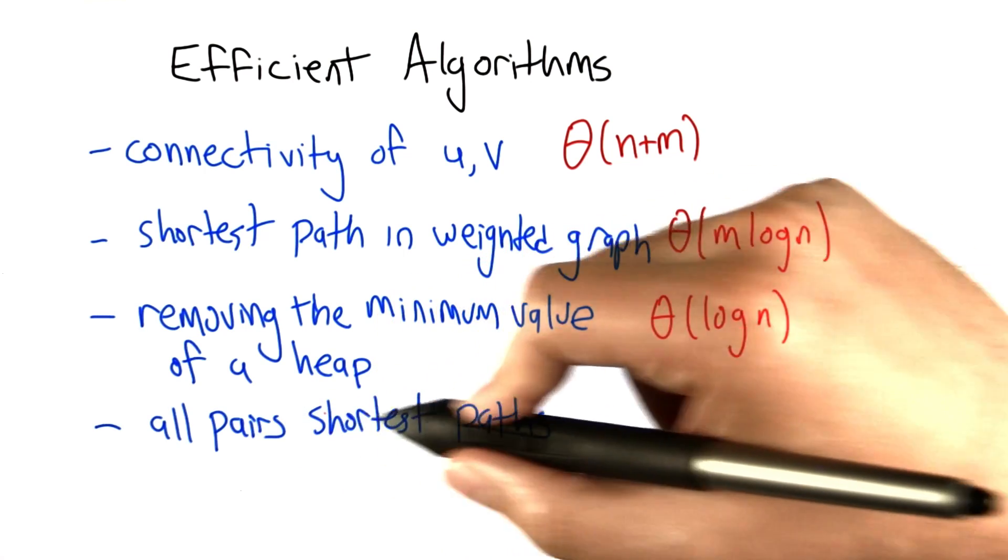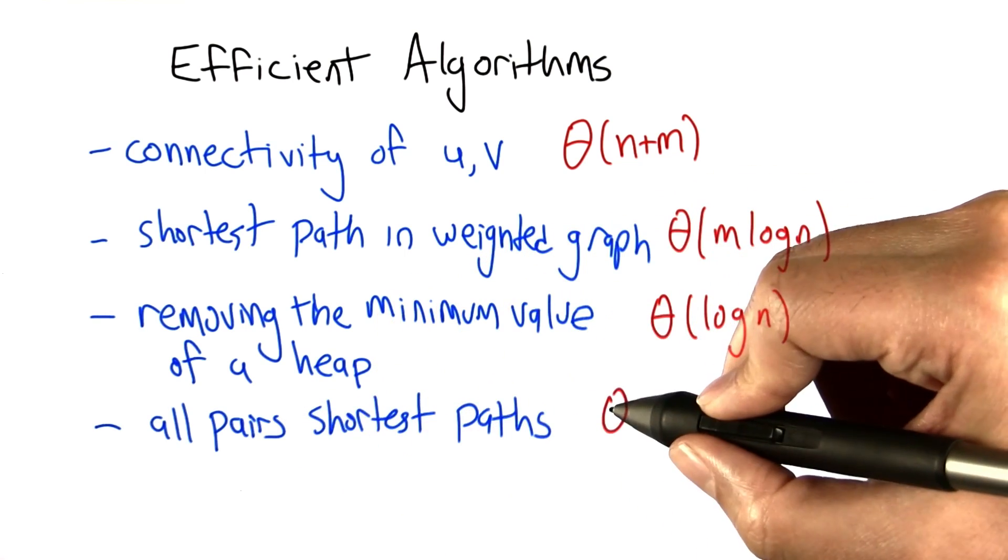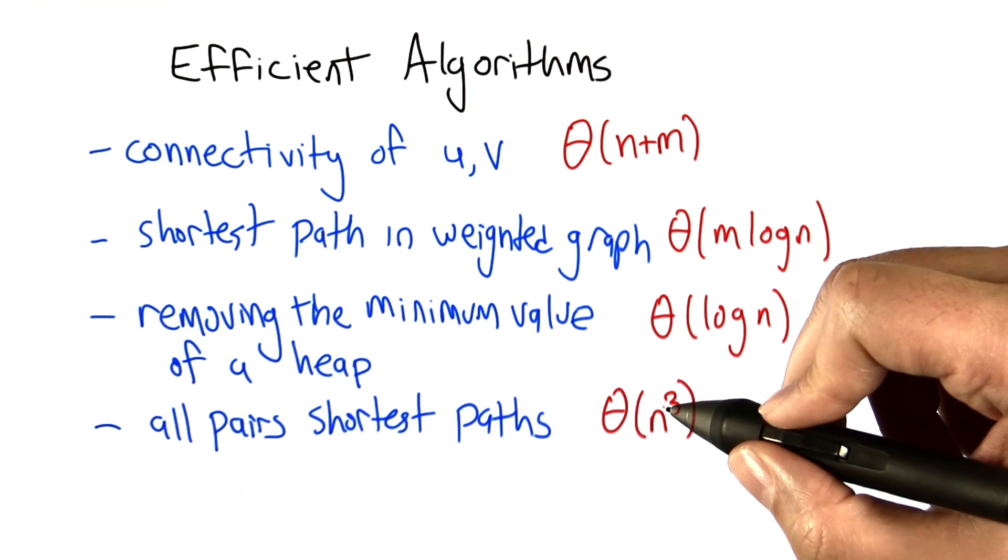For the problem of finding the shortest path between all pairs of nodes in a weighted graph, was taking n cubed time, at least one of the algorithms.